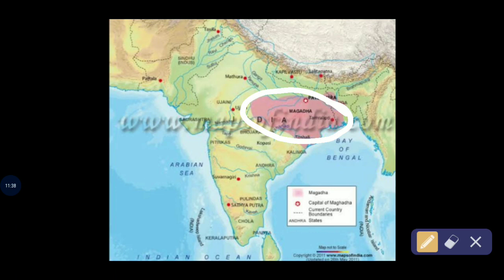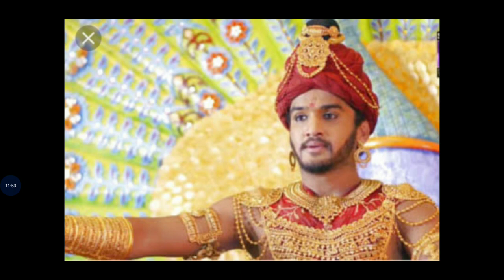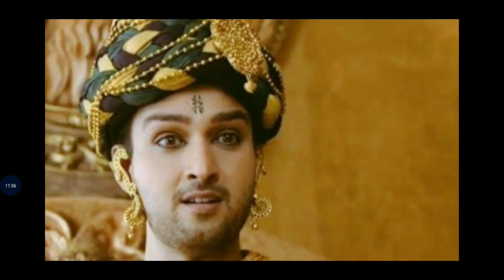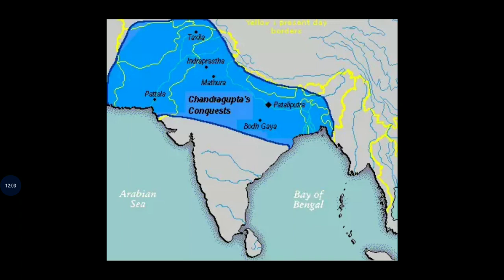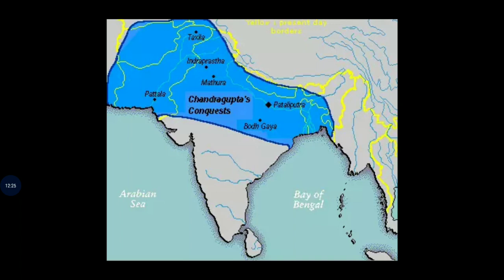The rulers of Magadha were very powerful. Dhananand was the king of the Nanda dynasty. After him, Chandragupta Maurya defeated Dhananand and established his Maurya empire. Chandragupta extended the borders of his empire towards Persia by war against Seleucus, the general and relative of Alexander. Magadha's rulers set up large kingdoms in other parts of the country as well.